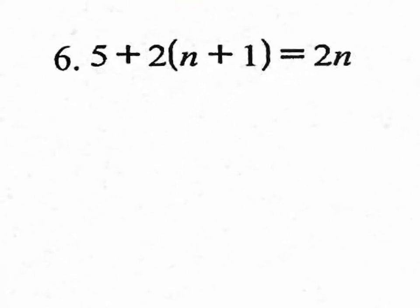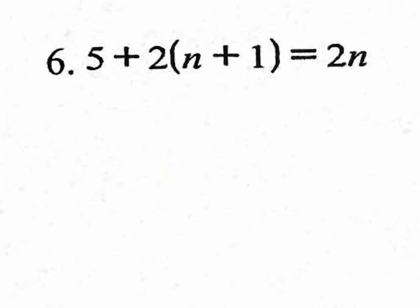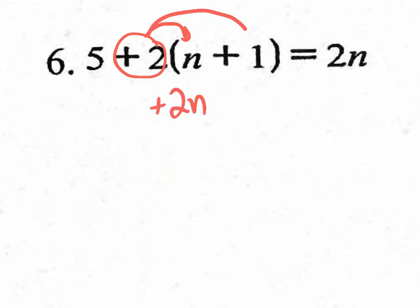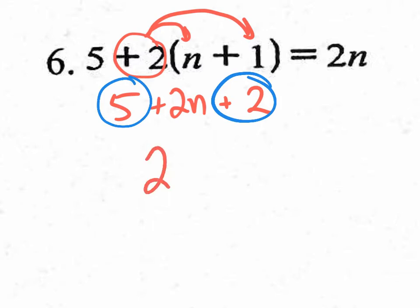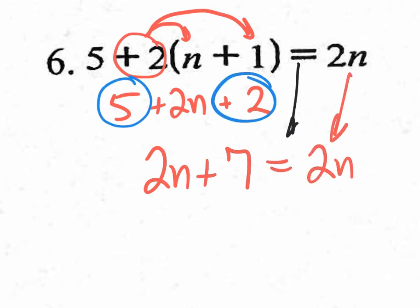Let's jump into number 6. Again, no fractions, but this one does require simplification — distributive property or combining like terms. We'll look at one side at a time. On the right side, there's nothing to distribute or combine; it's just a nice 2n. On the left side, there's definitely distributive property. We take that positive 2 and distribute it: positive 2 times n is positive 2n, and positive 2 times 1 is 2. Bring down the 5. Out of those three terms, 5 plus 2 is 7. So we have 2n plus 7 on the left, and the equal sign and 2n come down on the right.